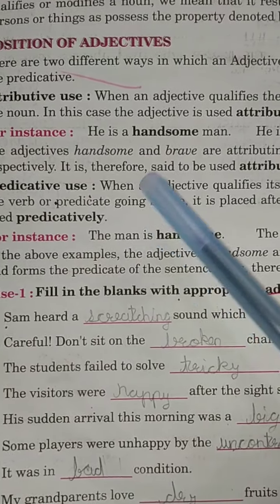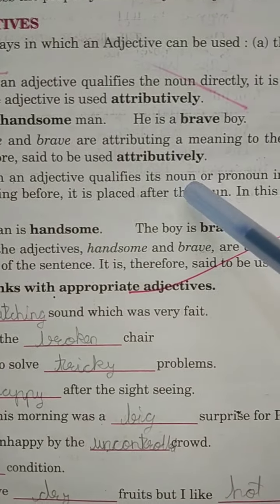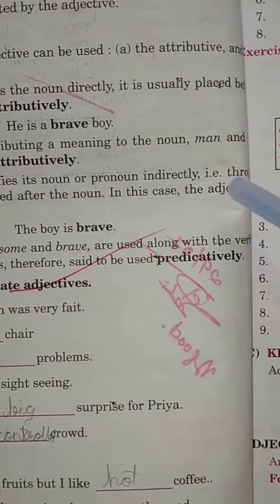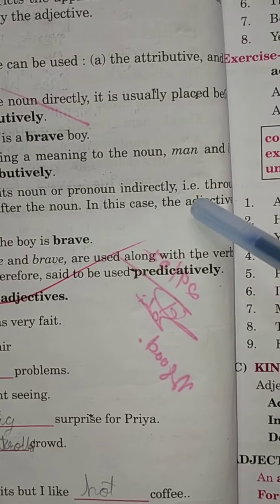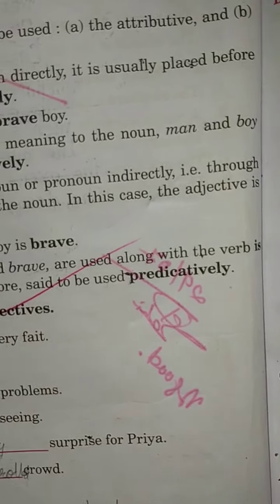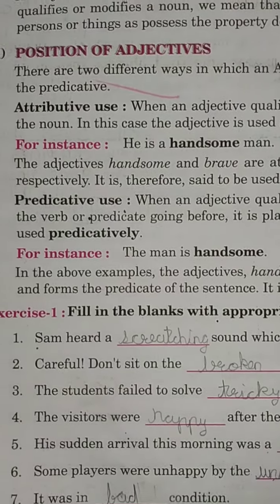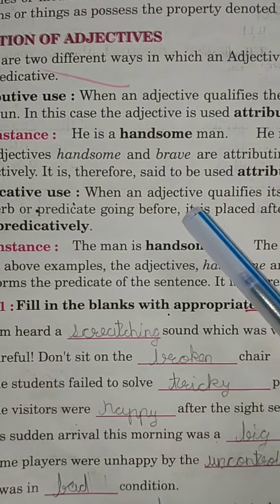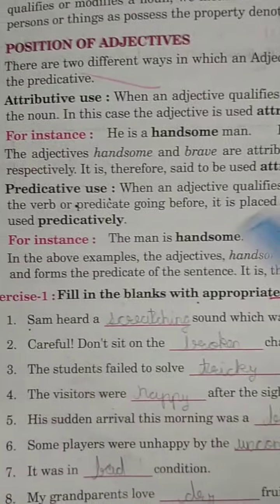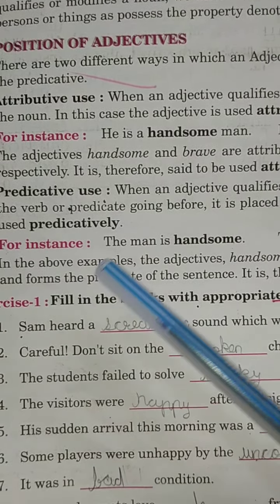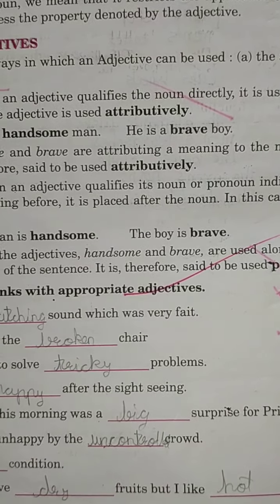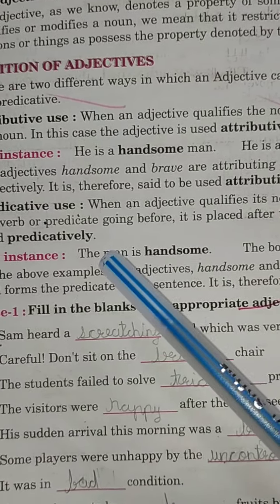Now Predicative use. When an adjective qualifies its noun or pronoun indirectly — through the verb or predicate — it is placed after the noun. In this case, the adjective is used predicatively. For example: 'The man is handsome', 'The boy is brave'. In predicative use, adjective noun ke baad aata hai.